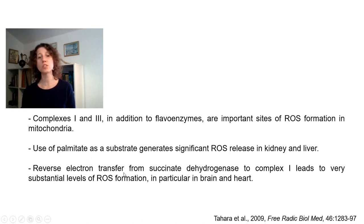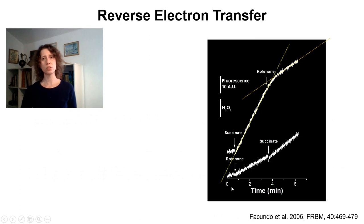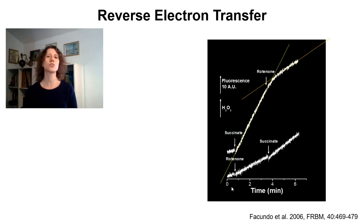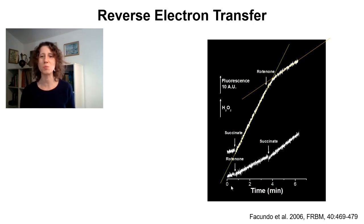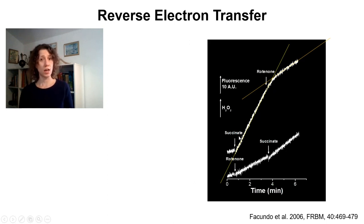Another conclusion was that reverse electron transfer from succinate dehydrogenase is an important source of oxidants, particularly in brain and heart tissue. To exemplify this, here is experimental data from my group showing hydrogen peroxide generation measured with Amplex Red over time in isolated heart mitochondria. There is a very linear production of hydrogen peroxide in the presence of succinate as a substrate. When rotenone is added — without affecting respiration, since succinate is the substrate — there is a very steep decrease in hydrogen peroxide production, because rotenone prevents reverse electron transfer from coenzyme Q to complex 1.